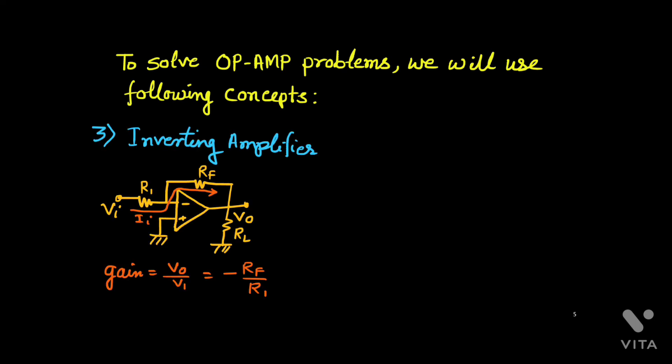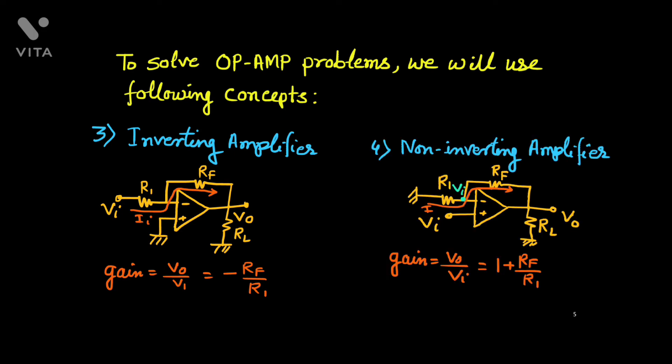Third is the inverting amplifier: with negative feedback, if input voltage VI is connected through R1 to the inverting terminal, the gain is negative and given by minus RF over R1. Fourth is the non-inverting amplifier: input VI is connected to the non-inverting terminal with feedback at the inverting terminal, and the gain is positive — given by 1 plus RF over R1.